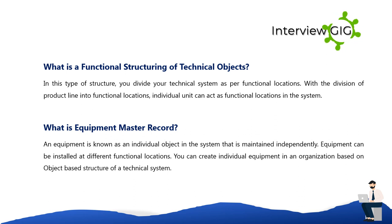What is functional structuring of technical objects? In this type of structure, you divide your technical system as per functional locations. With the division of a product line into functional locations, individual units can act as functional locations in the system. What is an equipment master record? Equipment is an individual object in the system that is maintained independently. Equipment can be installed at different functional locations, and you can create individual equipment in an organization based on the object-based structure of a technical system.